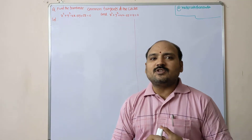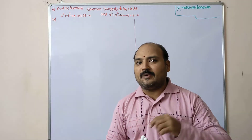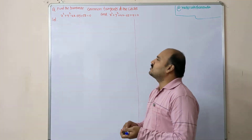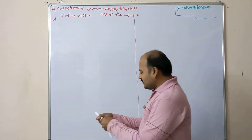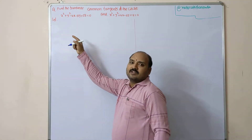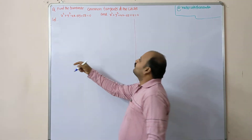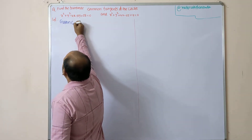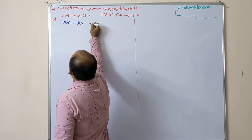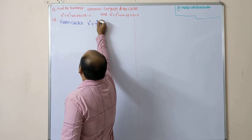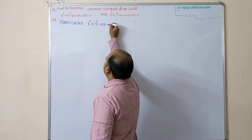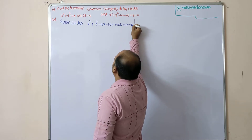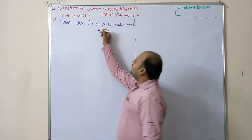Transverse common tangents are those where the tangent touches either side of the circles — that is, it crosses between the circles. The general procedure: first, write down the given circles. The first circle equation is x² + y² - 4x - 10y + 28 = 0, equation number one.